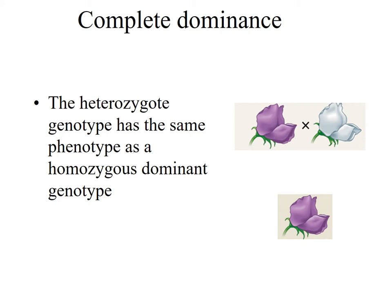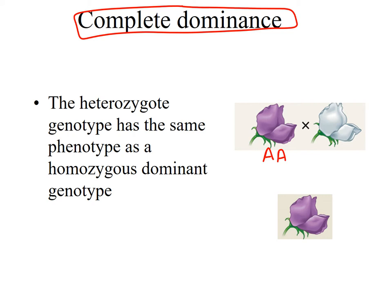In review of what Mendel showed with his crosses was something called complete dominance. In complete dominance, if you look at a heterozygote, one of the alleles determines the phenotype. For example, in crosses between pea plants, a purple flowered pea plant which was homozygous dominant was crossed to a purebred white pea plant which was homozygous recessive, and all the offspring in the F1 were heterozygotes. They were purple, because in the heterozygote, purple is completely dominant to white.